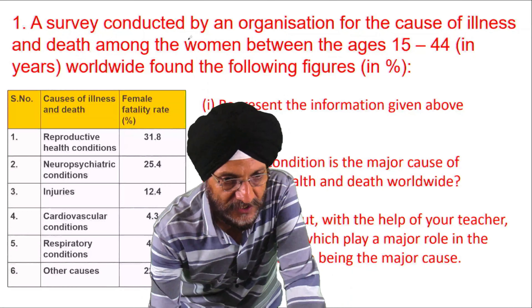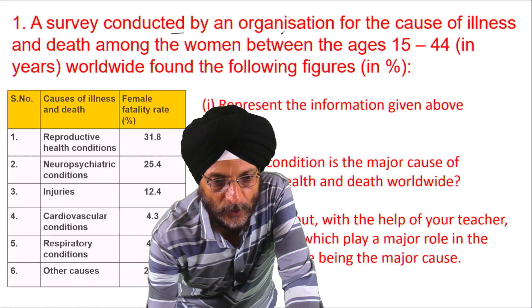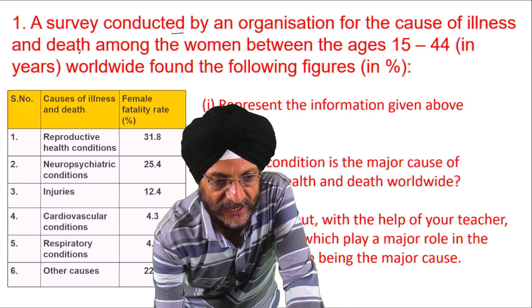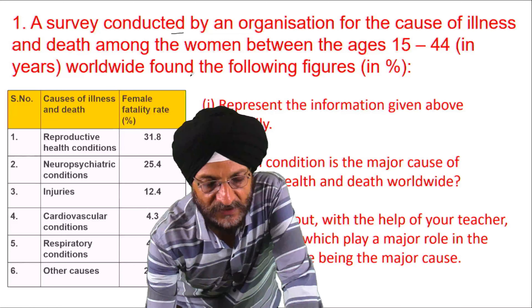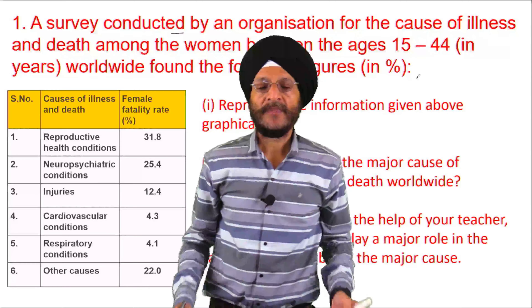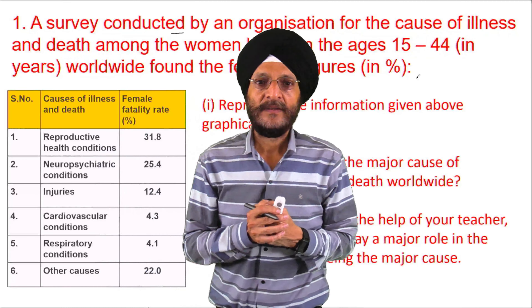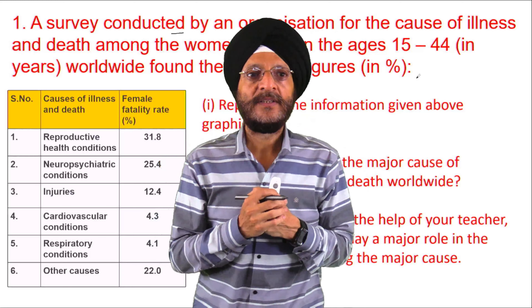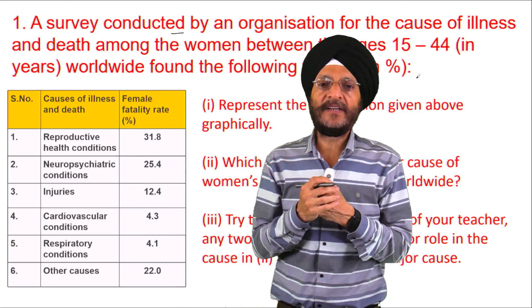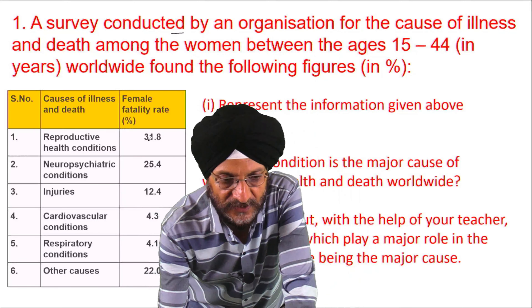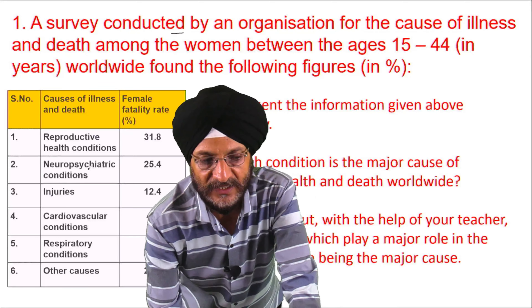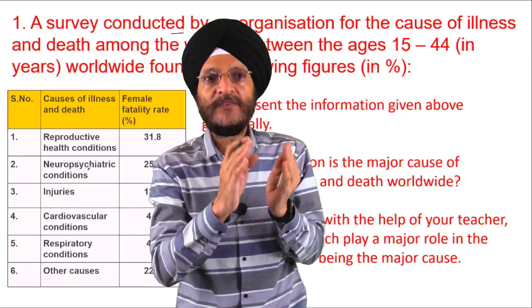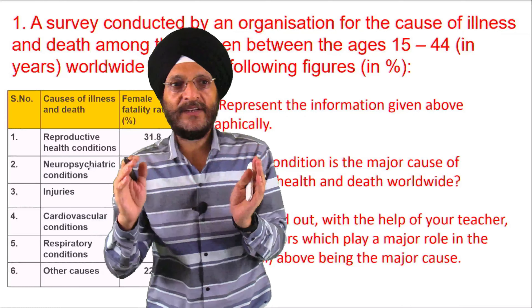The question before us is a survey conducted by an organization for the causes of illness and death among women between the ages 15 to 44 worldwide. The survey found that the female fertility rate due to reproductive health conditions was 31.8%, and 25.4% was due to neuropsychiatric conditions, and so on. These are the causes of illness and death among women with the respective fertility rates given.